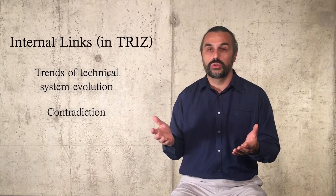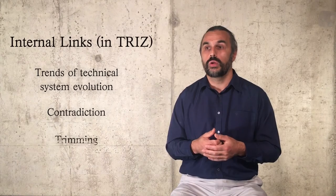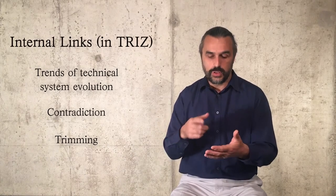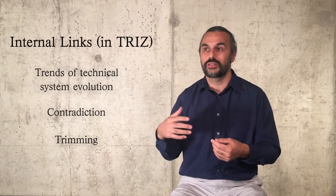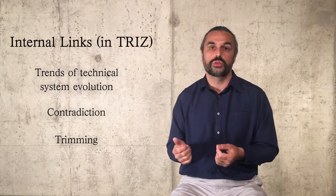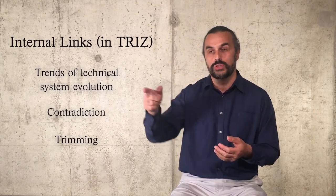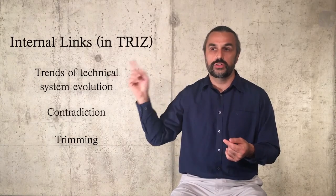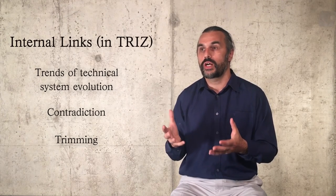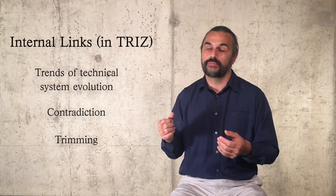Another link can be given to trimming. When we have a functional model and try to eliminate one element after another, making the system simpler or cheaper, if we trim everything, we should arrive at the Ideal Final Result — where there is no system, everything has been trimmed, but the function is ensured, either because the super-system treats itself, or the function is delegated to another system. These are the direct links of the Ideal Final Result to other elements of TRIZ, and there are also indirect links found almost everywhere — in substance-field analysis, functional models, and other tools.